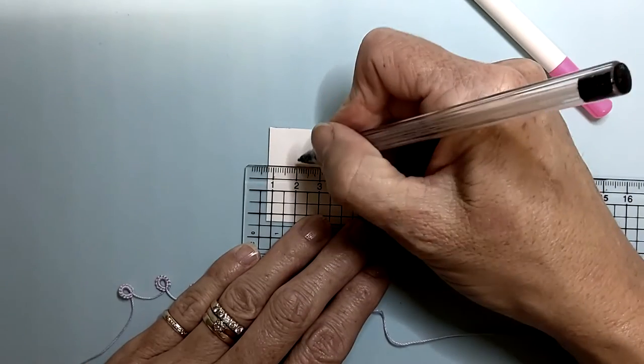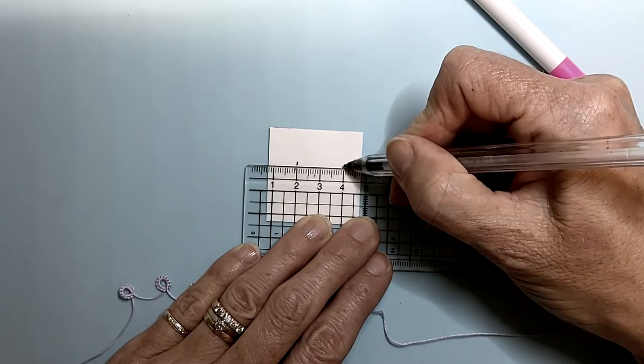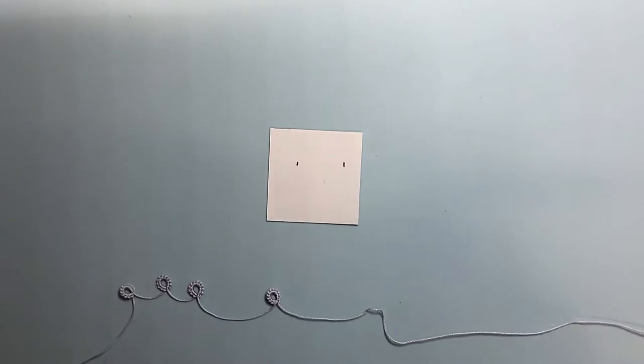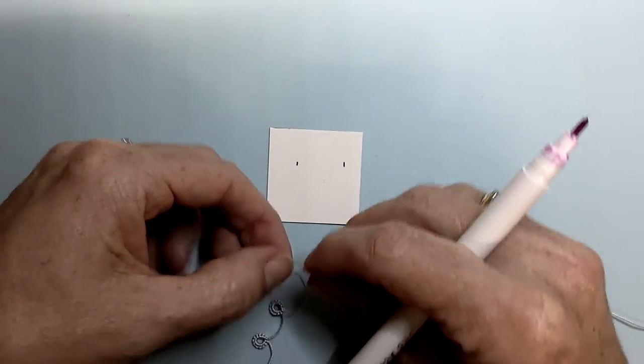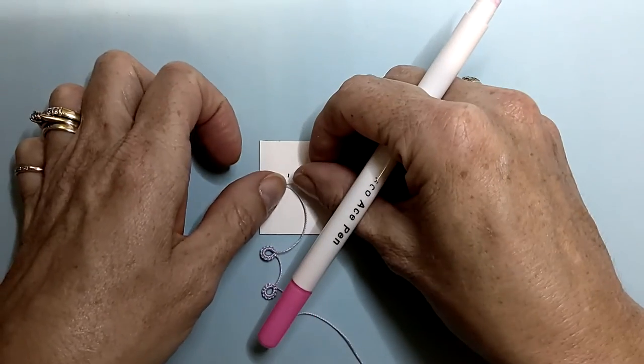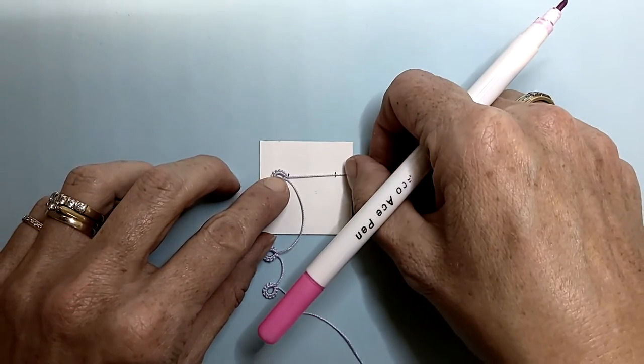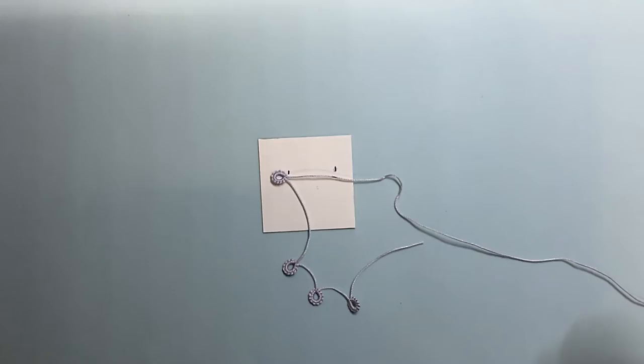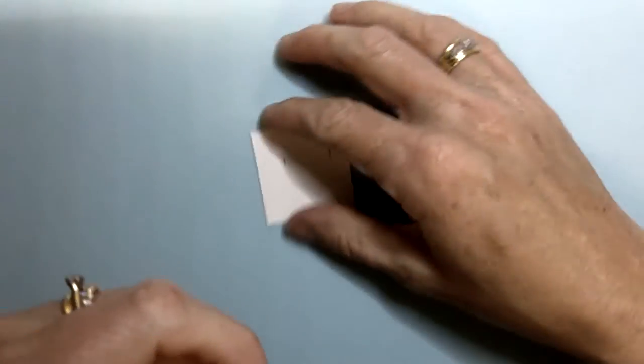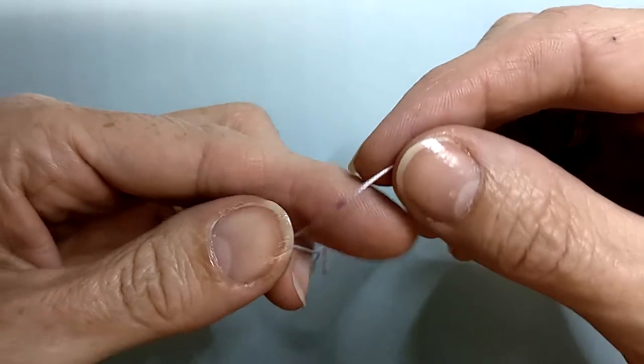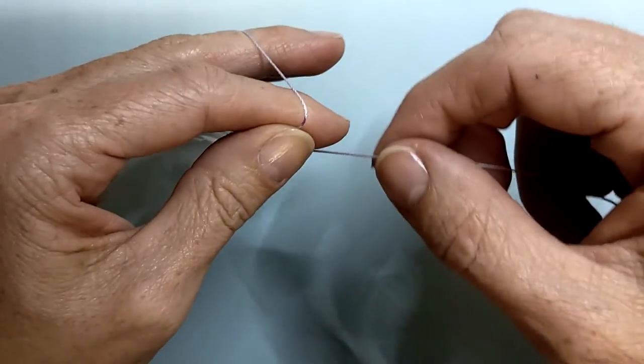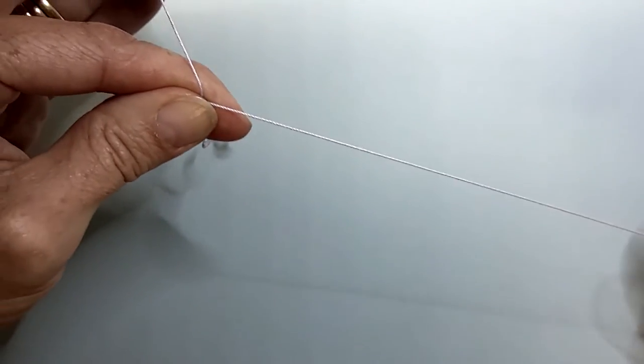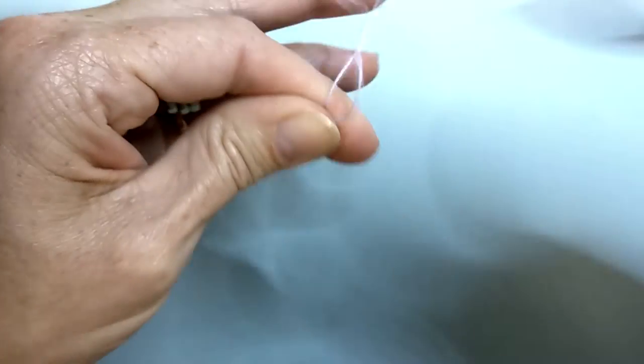To use your marker, measure the length that you want your bare thread space to be. Place your thread, cross your thread at that mark, and bring your first stitch down.